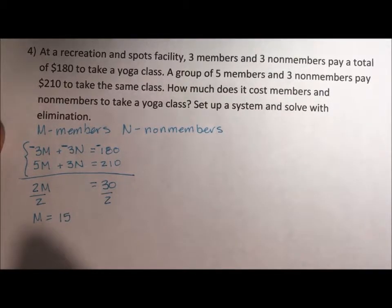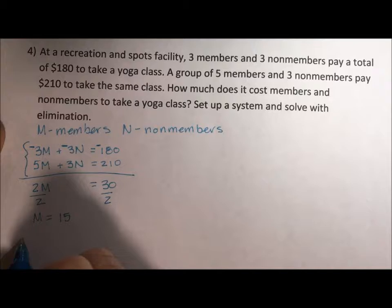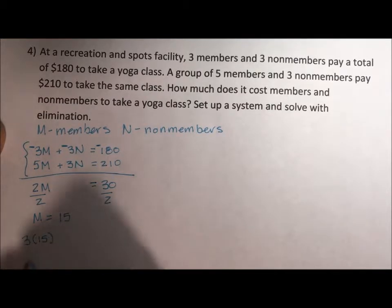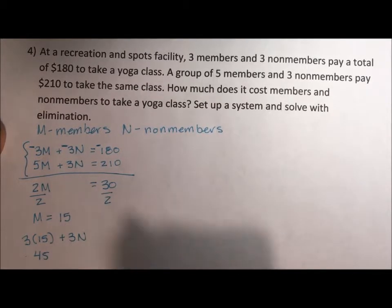All right, so now I want to figure out what non-members make. So 3 times 15. So the members pay $15, and this first class had three of them. So $45 from the members, plus three times the non-members. We don't know this one yet. And that class made $180.